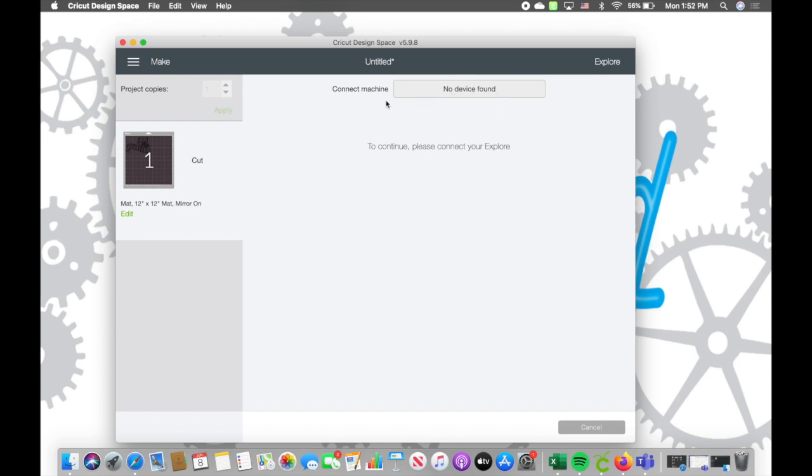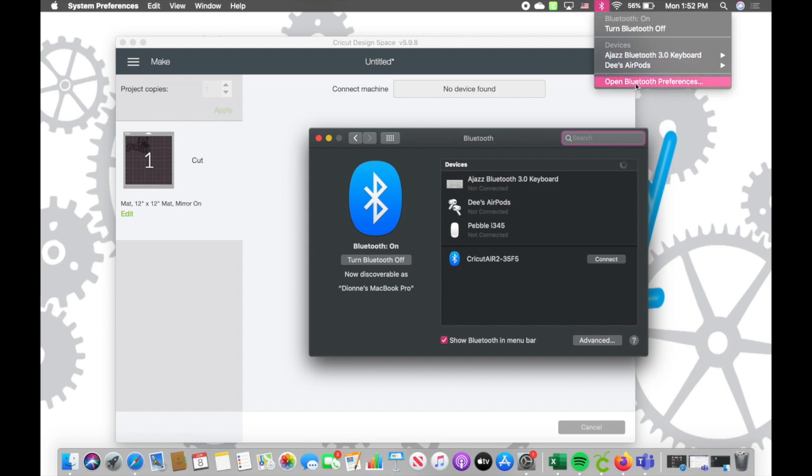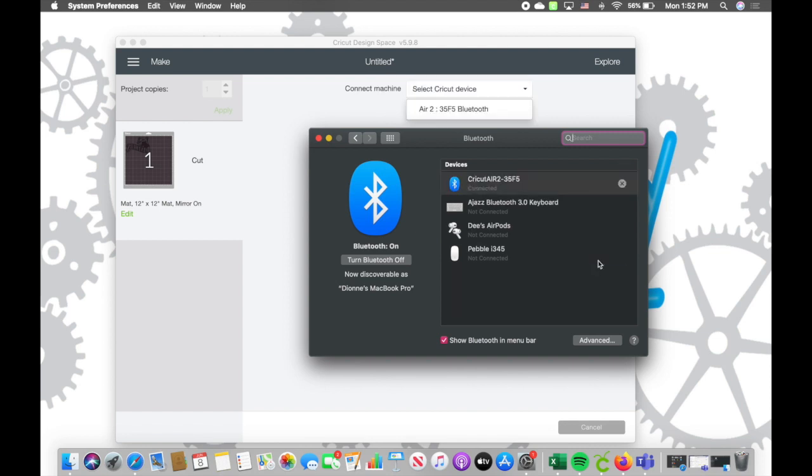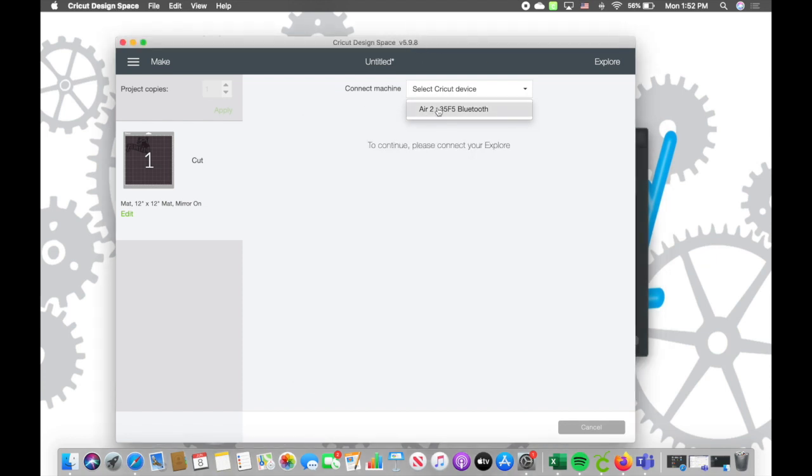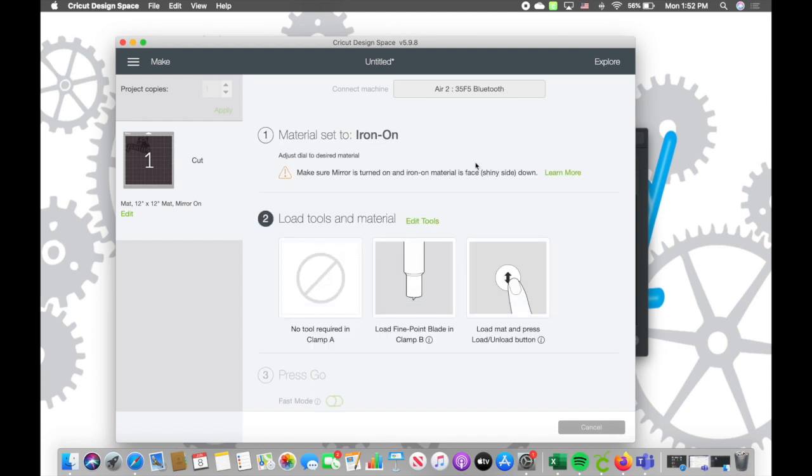If you have never connected your Cricut to your computer, you're going to want to go into your Bluetooth settings. Make sure that the Cricut is on, and here I just hit open Bluetooth preferences. The Cricut Air 2 should appear here and we're just going to hit connect. There you go, it says connected. We're going to go back to our Cricut design window and hit Air 2, and it has connected.